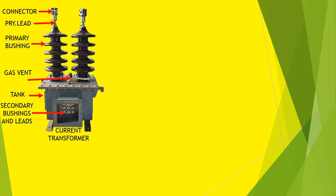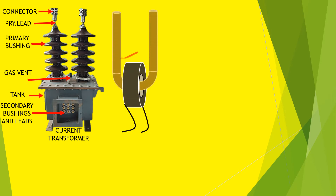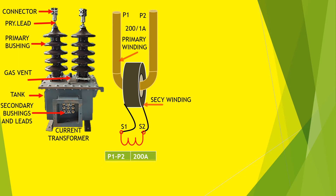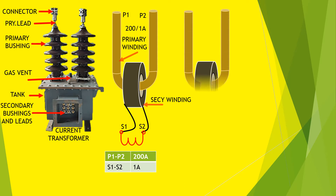Now see the drawings of the current transformer winding and cores. P1 and P2 are its primary winding connection leads. It has only one core at the secondary side having secondary leads S1 and S2. The rating is 200/1 ampere, which means if current inflows 200 ampere through the primary, then secondary current will be 1 ampere.